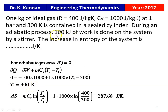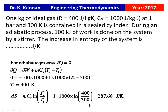For the adiabatic sealed cylinder process, the change in entropy is: ΔS = M·CV·ln(T2/T1) = 1 × 1000 × ln(400/300) = 287.68 J/K. The answer is 287.68 joules per Kelvin.